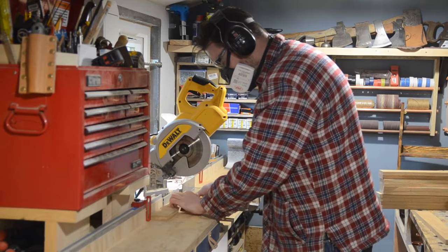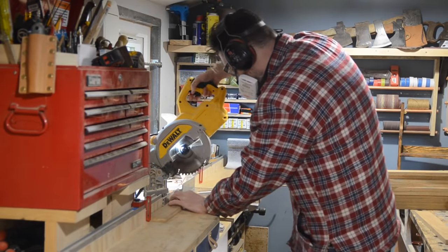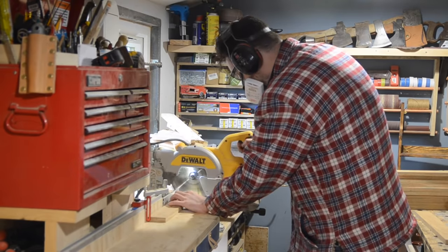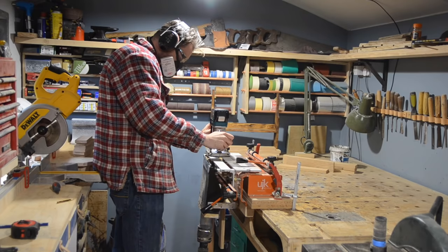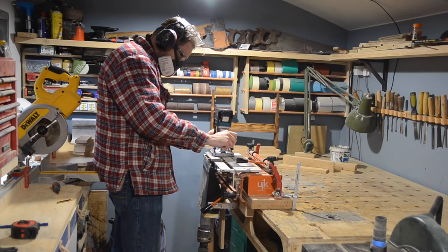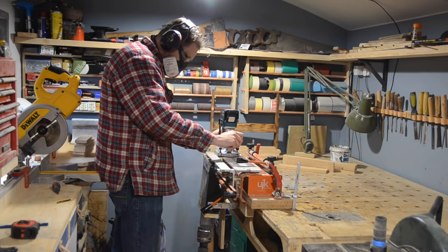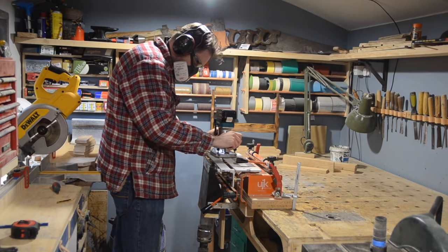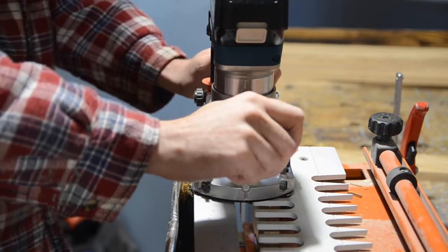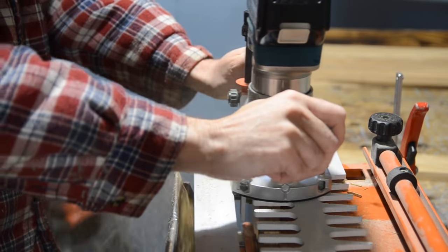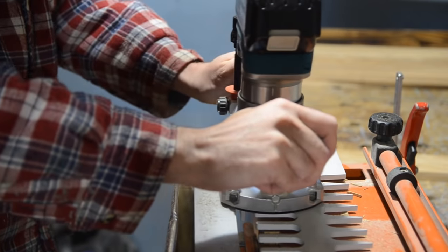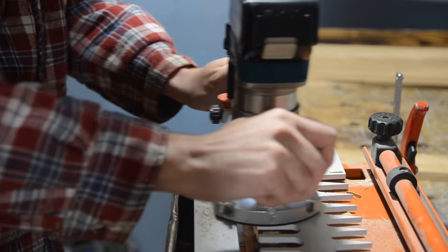I can now set up some stops on the mitre saw and get all the bits cut to length. I want this to have two shelves holding eight jars per shelf. I'm going to join it all together using my finger joint jig and the router. I've done a few videos about using this, and probably with setting up and getting it cut, it took five minutes for this project. So once you know what you're doing, it's a pretty quick machine to use.